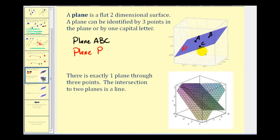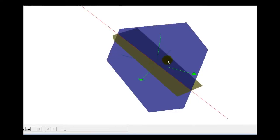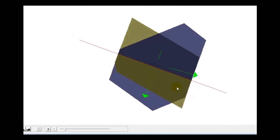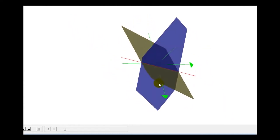A couple more things to mention about a plane. There's exactly one plane through three points. So just like there's only one line through two points, there's only one plane through three points. And then if two planes intersect, they will intersect in a line. Now it's kind of hard to see here, so let's go ahead and take a look at this on some software. Here we have a yellow and blue plane. And you can see the intersection of these two planes is the red line.